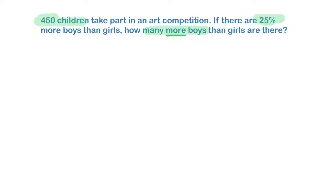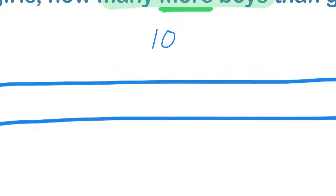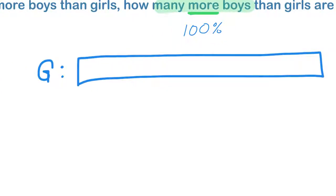The first thing I want to do is I'm actually going to draw a bar showing the percentage of girls. So this bar here represents all of the girls, which is, as a percent, 100% of the girls. That's all the girls there.